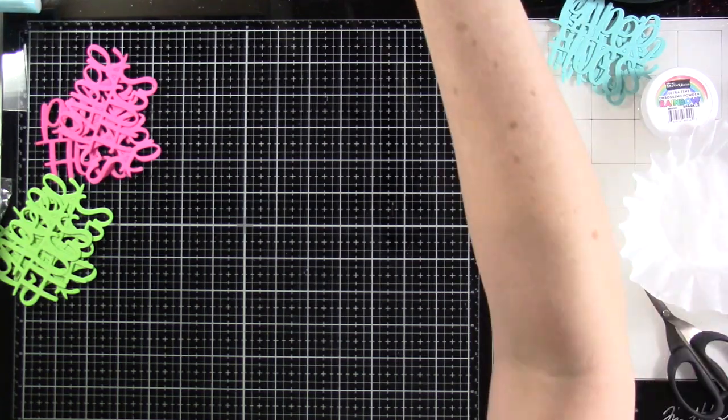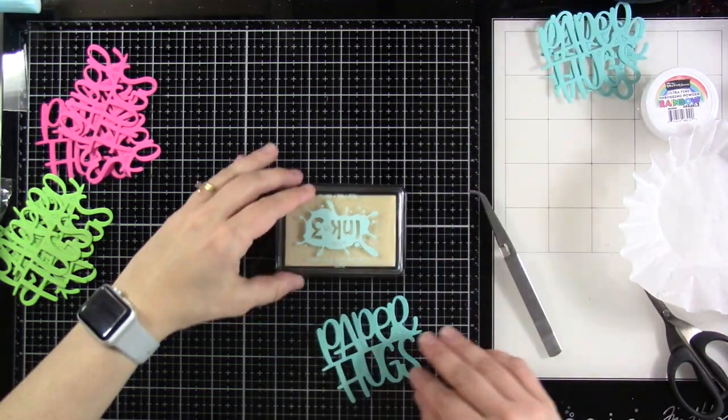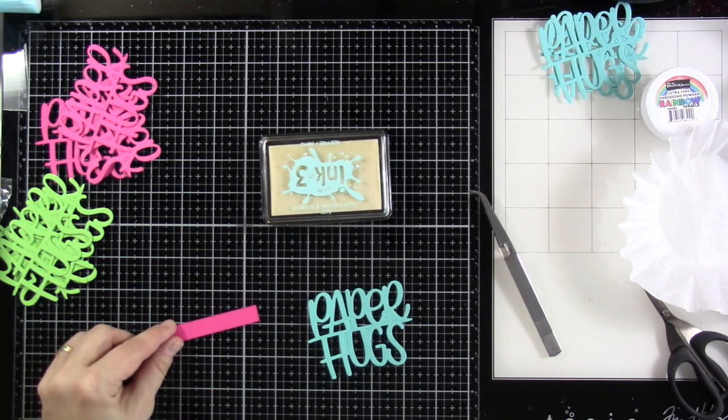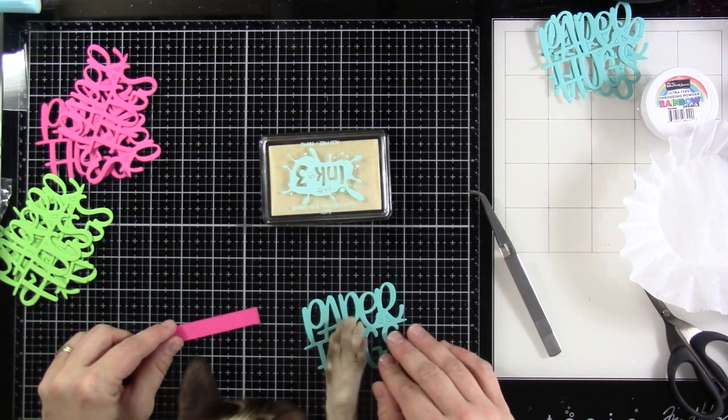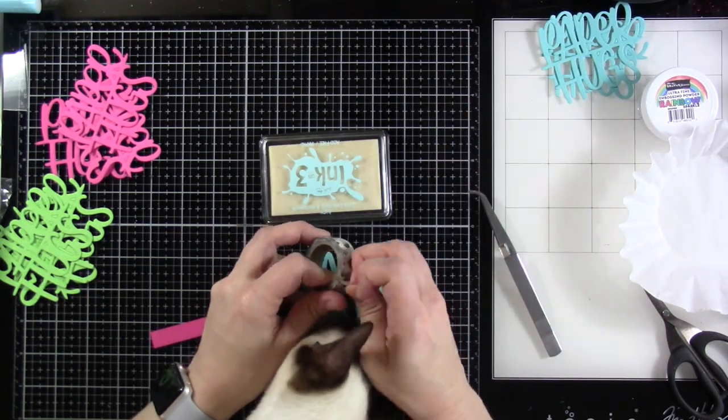You'll notice I have some rainbow sparkle embossing powder. This stuff is by Brutus Monroe and it is amazing. I love it. So if you ever want to add a little bit of sparkle, maybe deepen the color of what you got. And yes, Max has come to help. That rainbow sparkle is fabulous.